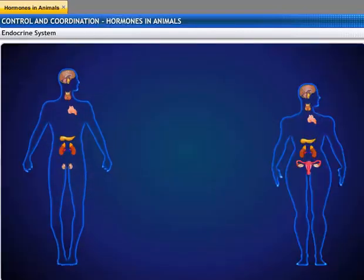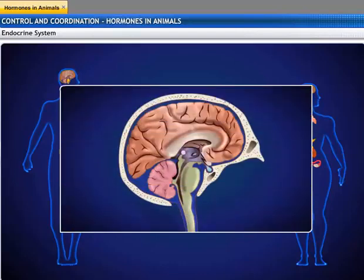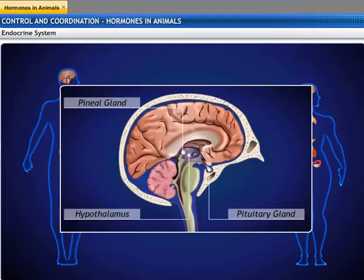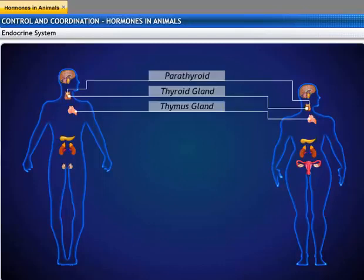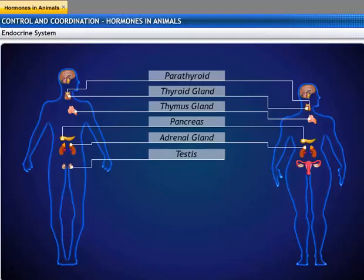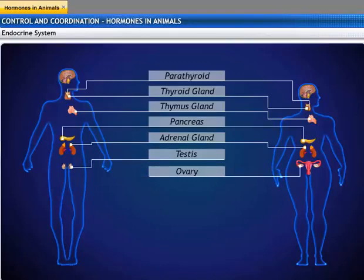For a better understanding of the endocrine system, let's look at the endocrine system in the human body. It consists of the pituitary gland, the pineal gland, the hypothalamus, the thyroid, the parathyroid, the thymus, the adrenal gland, the pancreas, the testes, and the ovary. We will look at the functions of each of these glands.